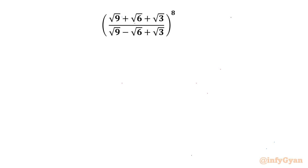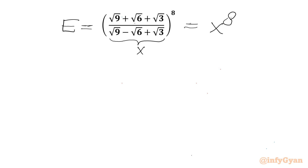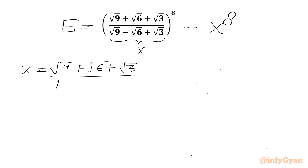Let's consider this expression equal to E first, and let this bracket be called x. So we will be evaluating x to the power 8 finally. Now I will write x separately: it is (√9 + √6 + √3) divided by (√9 - √6 + √3).